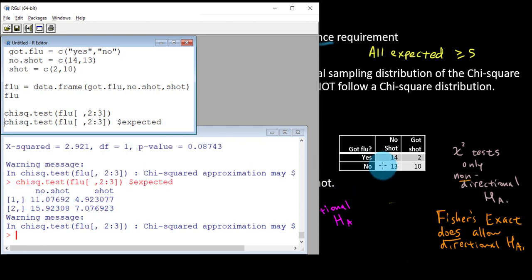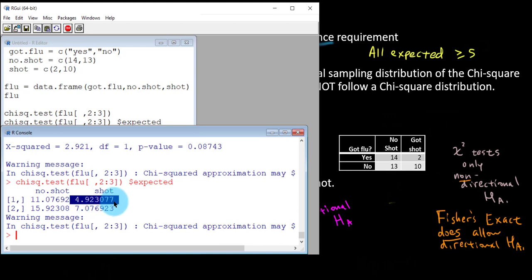So here, because this is a two by two contingency table, there are four entries. So there are four expected values as shown here. And notice one of them, at least one of them, does not exceed five. So therefore, we probably shouldn't use the chi-square test here. So that's the setup for the Fisher's exact test. What happens when we cannot meet this requirement? Let's do the new test.